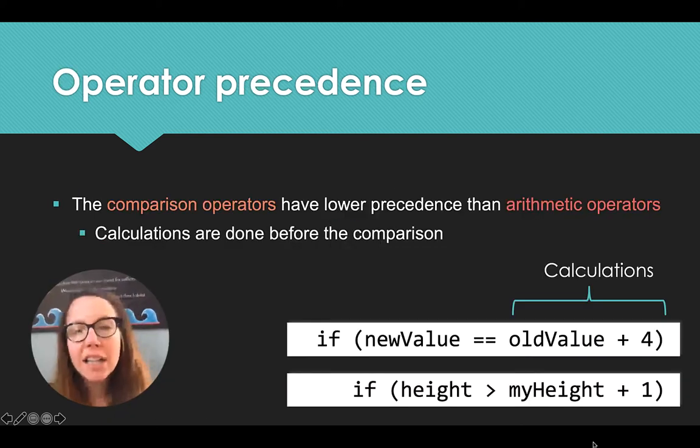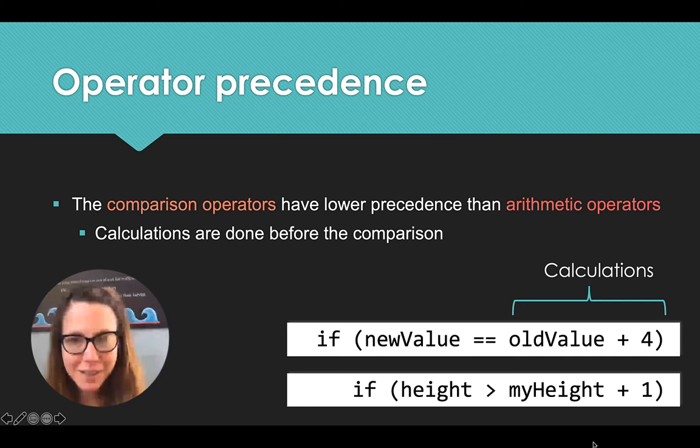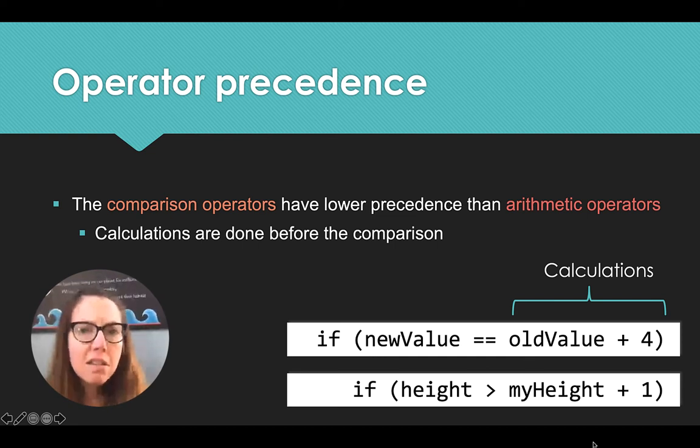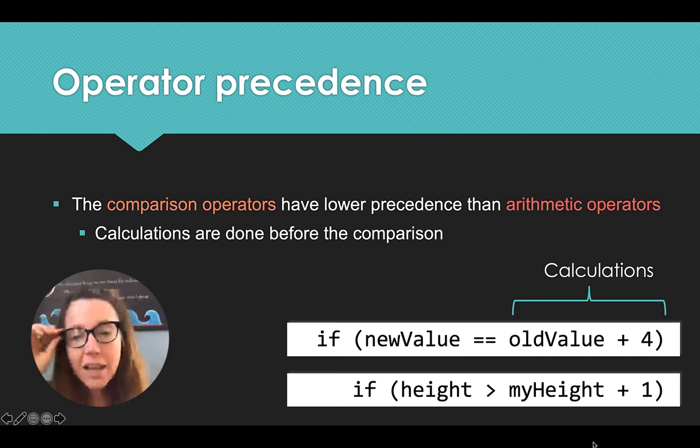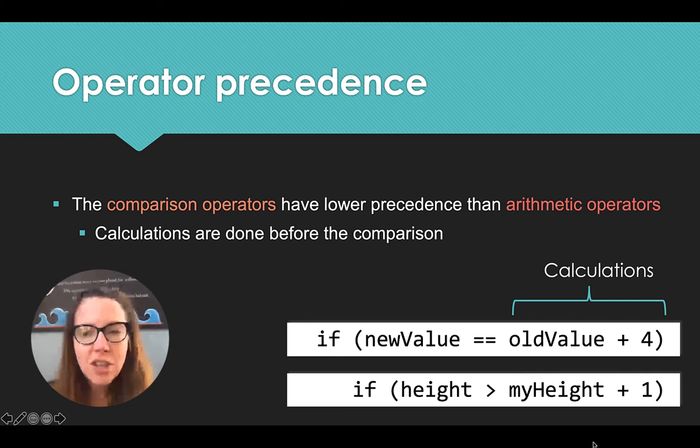So we've been talking about these Boolean conditions, and sometimes we want to do a check that a variable is equal to something simple, but other times we want to do some calculation and compare that to what's held in a variable. For instance, if we have a new value and we want to check its equality with the old value plus four. In this case, the calculation we want to happen first, right?